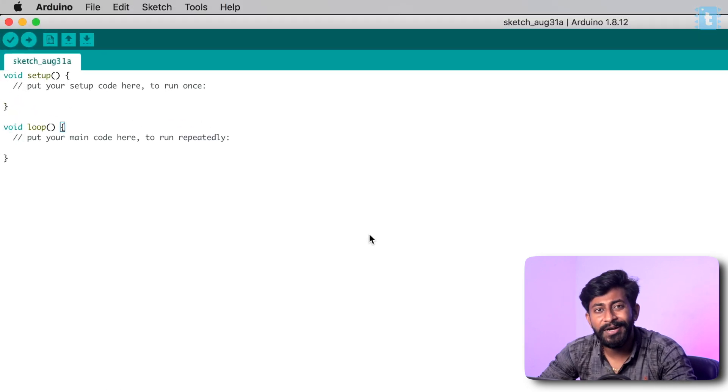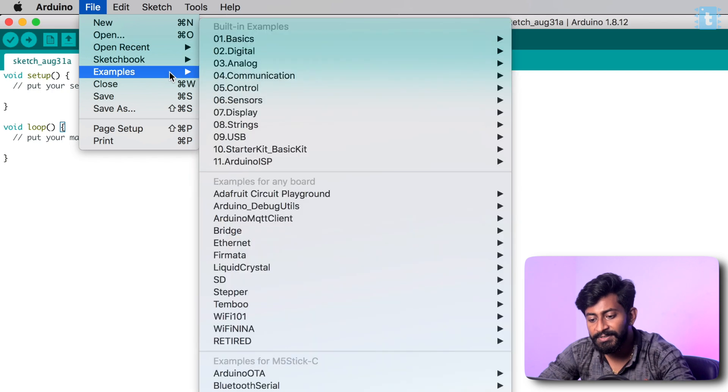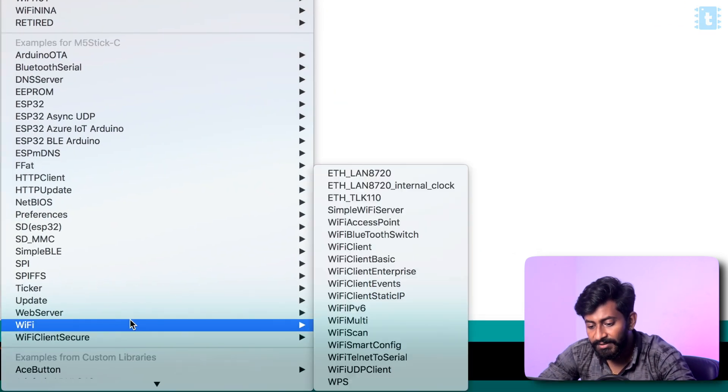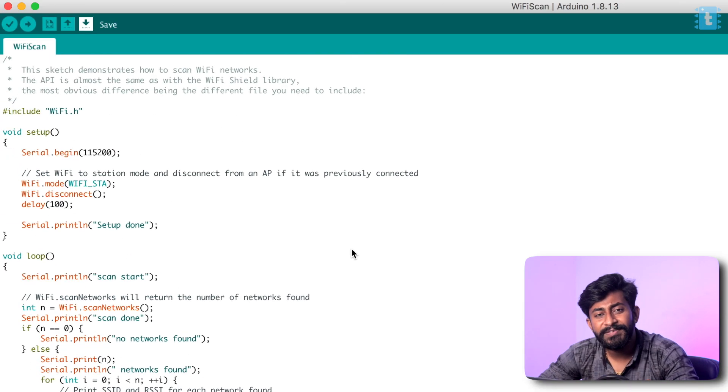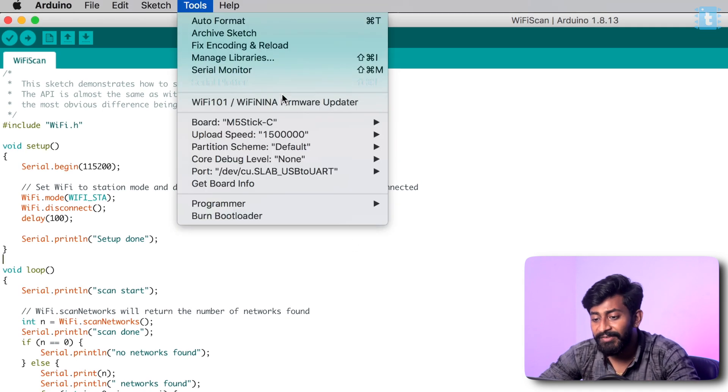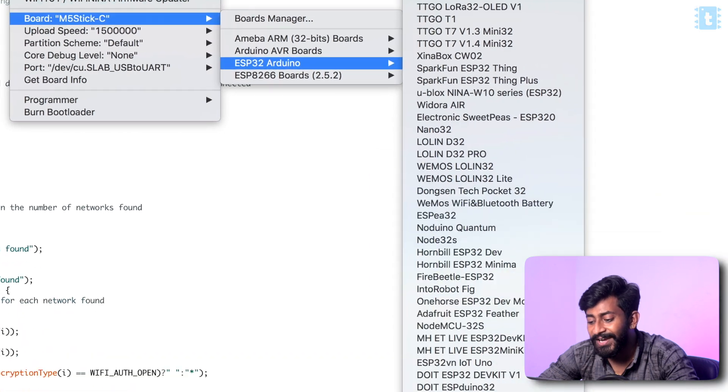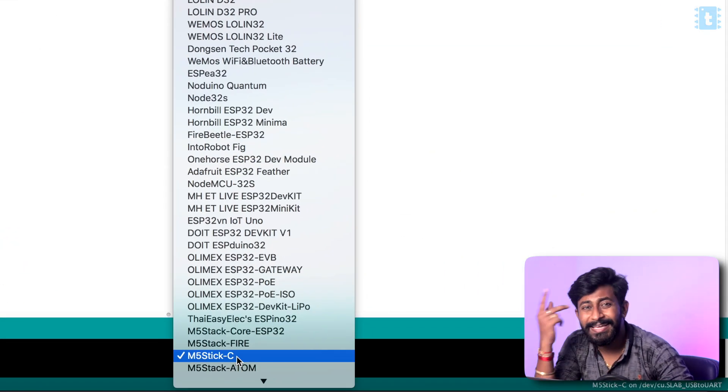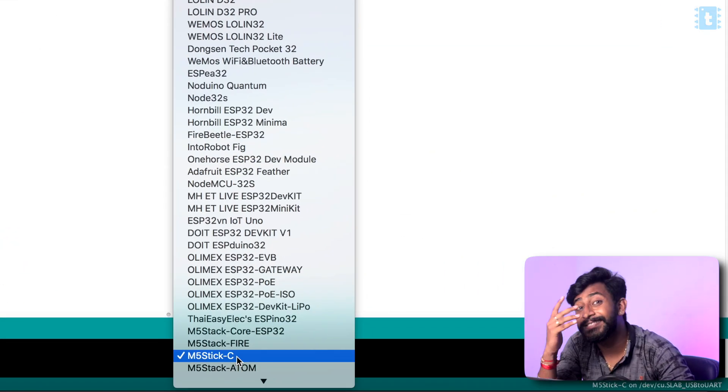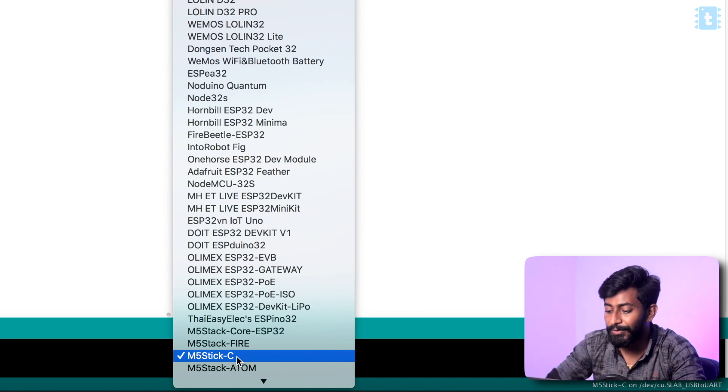After that click on close and now we are ready to upload any sample code onto the stamp module. I'll select the sample code as Wi-Fi scan by clicking on files, examples, Wi-Fi, and then Wi-Fi scan. Here is the example code. I'll leave this code as it is and straightaway select the right board. This time we have to select the board as M5 Stixy because both M5 Stixy and M5 stamp have the same chipset, which is the ESP32 Pico D4 module.